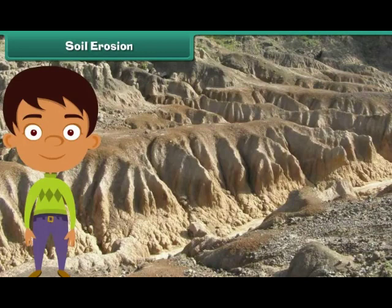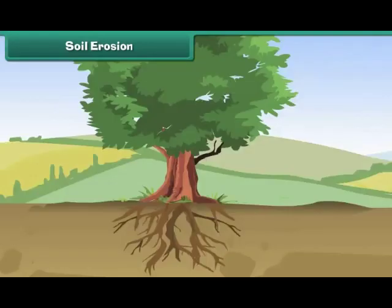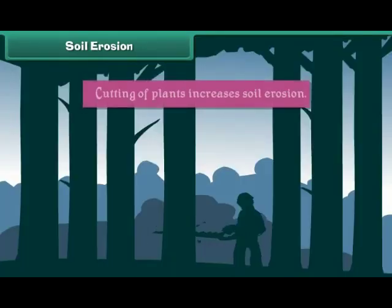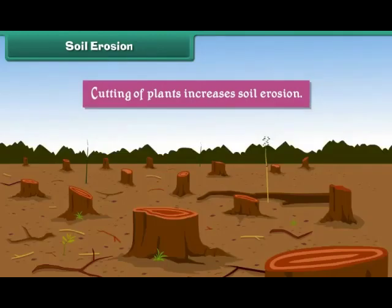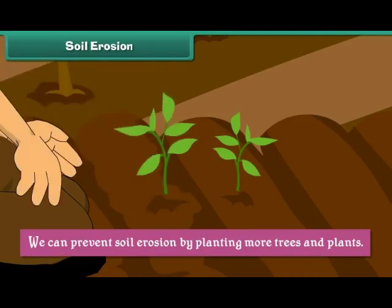Soil Erosion. Soil erosion is the removal and transfer of soil by wind and water. Roots of plants hold the soil and prevent soil erosion. Cutting of plants increases soil erosion. We can prevent soil erosion by planting more trees and plants.